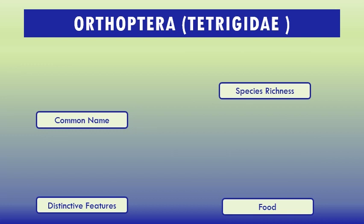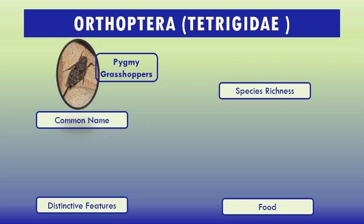Distinctive features: antennae shorter. Family Tetrigidae, common name pygmy grasshoppers. They look like miniature short-horn grasshoppers. Sound-producing and hearing organs are absent in pygmy grasshoppers. This family is best represented in the tropics where unusual forms are found. The pygmy grasshoppers are also known as groundhoppers or grouse grasshoppers.